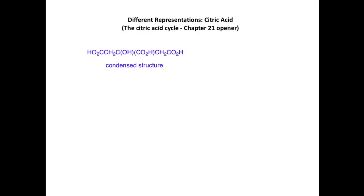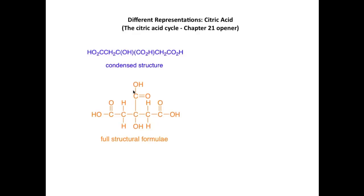In this representation of citric acid — the so-called condensed structure — we can see one, two, three carboxylic acid groups and the tertiary alcohol group. In the so-called full structural formulae, we now see the C-H bonds and the C-C and C-O bonds included.